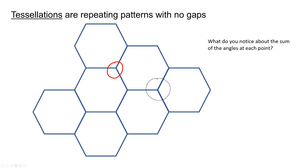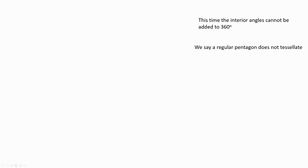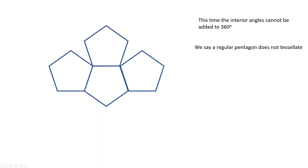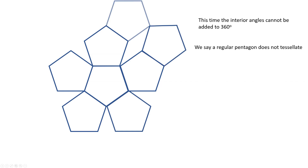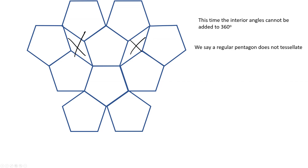We can tell the angles add up to 360 degrees, so we can say a regular hexagon will tessellate. If we look at a regular pentagon, it doesn't tessellate. Because if we join up the pentagons like this, you can see that we end up with gaps — there will always be gaps. Where the pentagons meet, the angles do not add up to 360 degrees because of this little gap here.